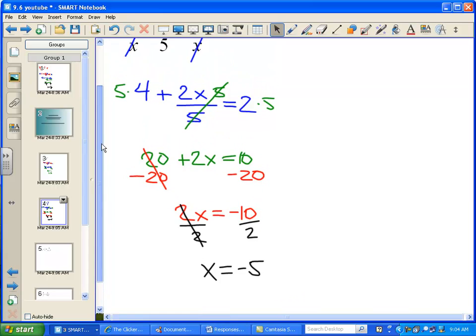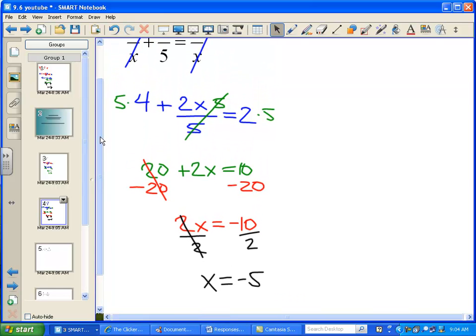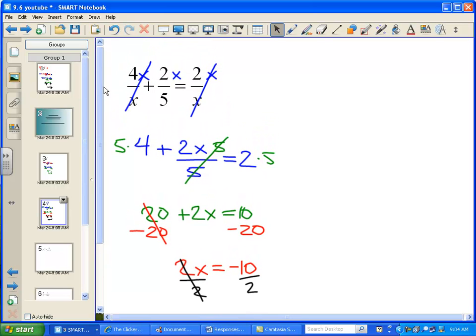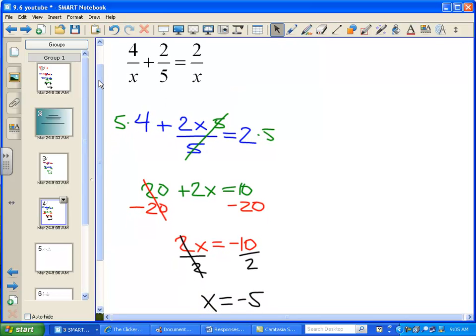And again, if you do a check of your work, it shows that that is the correct answer. But just to make sure, we want to go back to the original and just look for the situation where I could get undefined. So if the denominators are 0, that would be bad. In this case, if x were 0, but x is not 0, x is negative 5. So it looks like we're good to go.